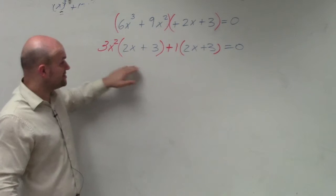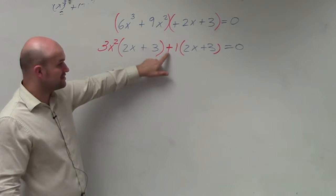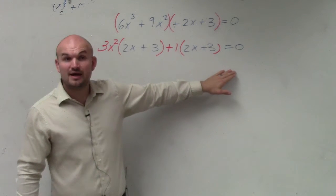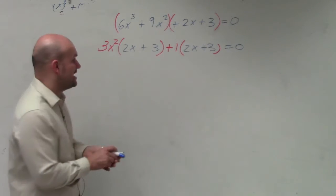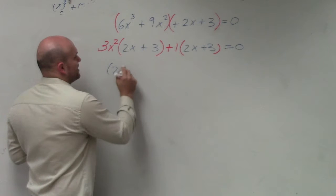The 2x plus 3, inside the parentheses, the 2x plus 3. Now these are two different terms because they're separated by addition. So we have this term and we have that term, and both of those two terms have a 2x plus 3 in common. So guess what we do? We factor out the 2x plus 3.